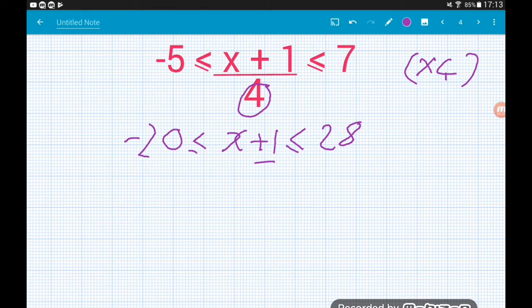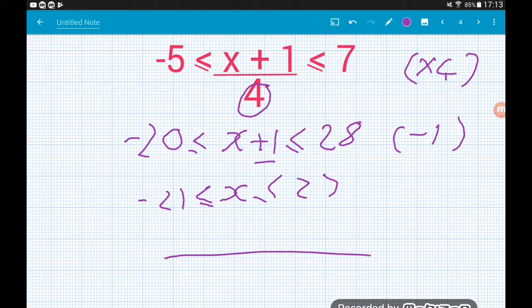Now we just need to sort out this plus 1. So we're going to take away a 1 from all three parts. Minus 20 minus 1 is minus 21, which is less than or equal to x, which is less than or equal to 27. So on a number line, find minus 21, find positive 27. Now both of them here have a colored in circle because we've got two or equal inequalities. And then we join those up with a line.